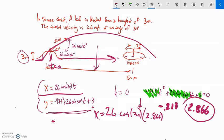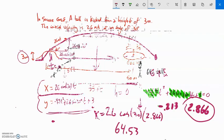26 cosine 30 times 2.86, and I get about 64.53. So if this is 50 meters here and this is only 3 meters long, it definitely happens later. That shot will have overshot the green.